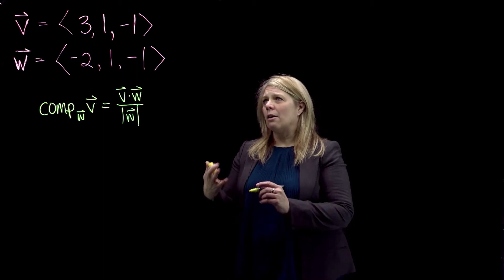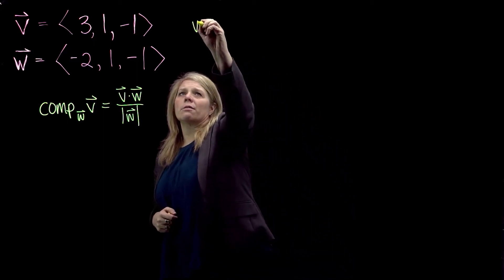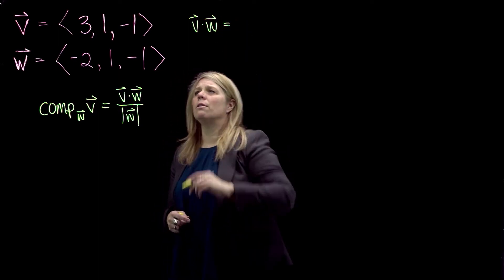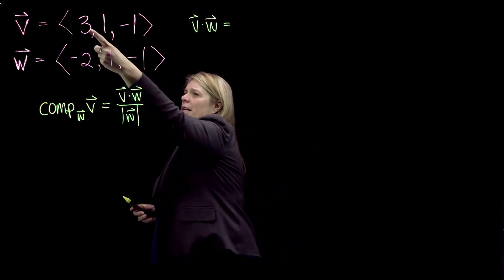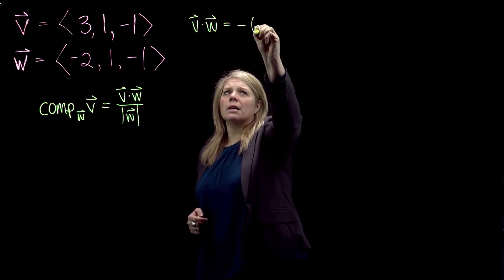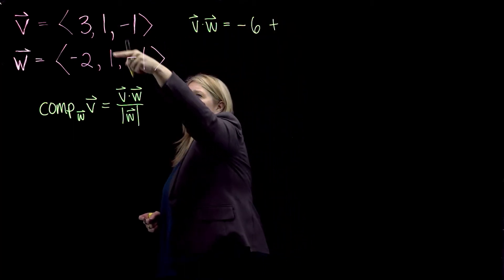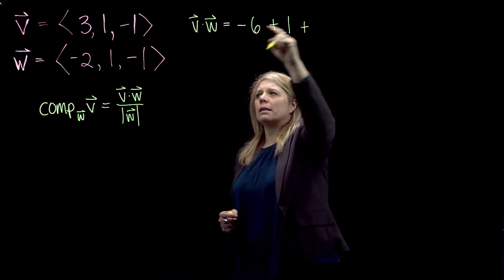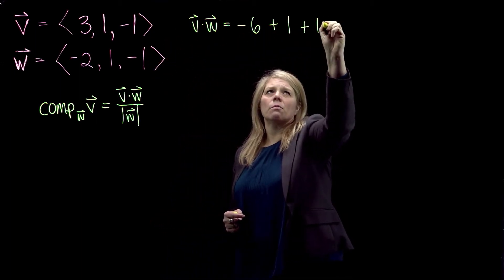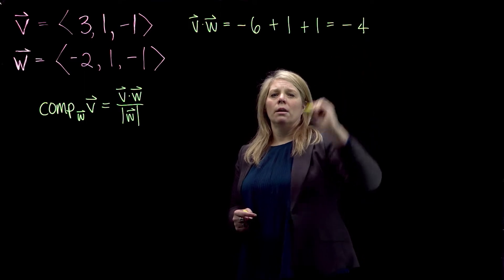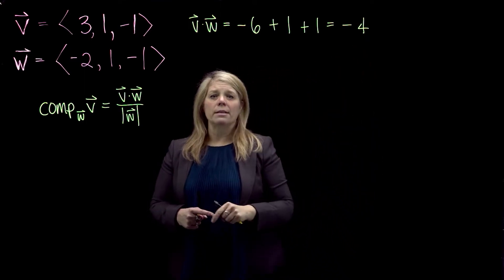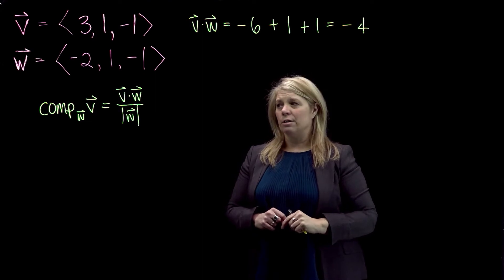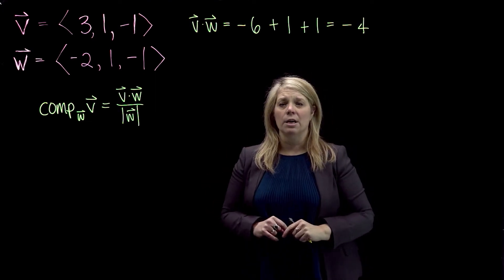I'll go ahead and calculate the dot product as scratch work. V dot W: 3 times negative 2 gives negative 6, plus 1 times 1 is 1, plus negative 1 times negative 1 is also 1. So I get negative 4. That negative value tells us we have an obtuse angle between our two vectors.